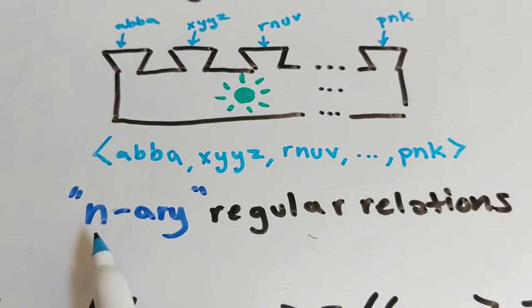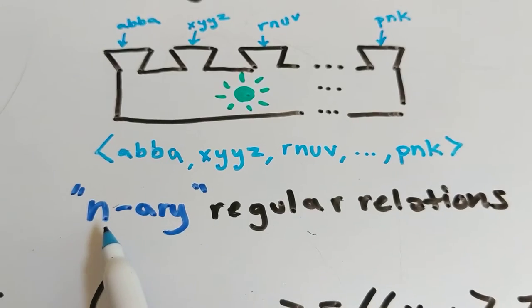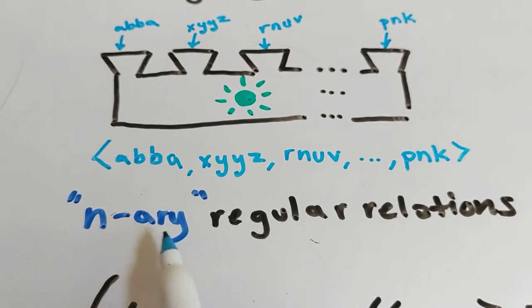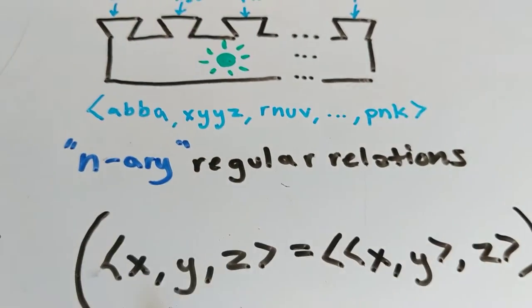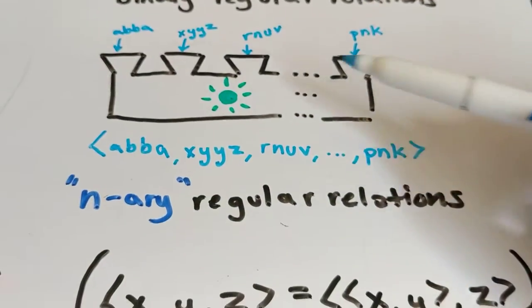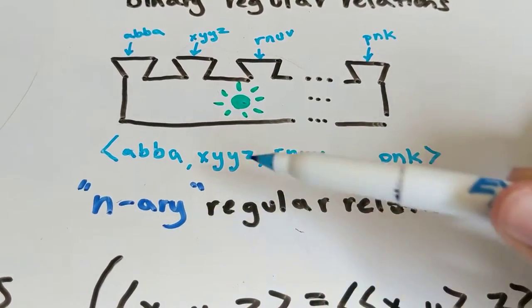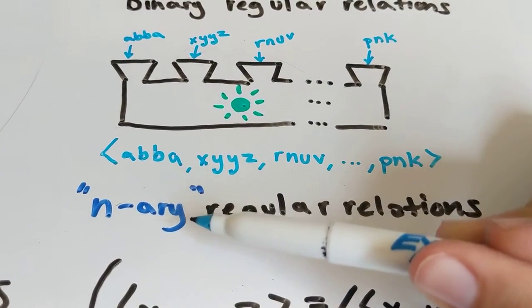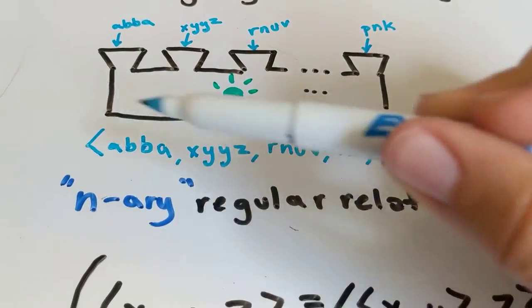N-ary meaning like to the number n, to some number. N-ary regular relations. And this is what in the next video we're going to define is how we deal with these n-ary regular relations, how you can generate these using a recursive definition.